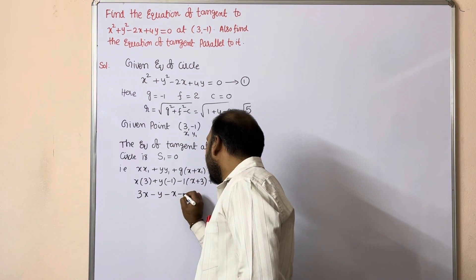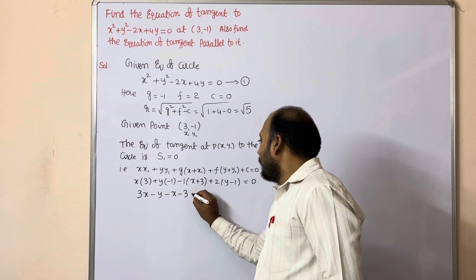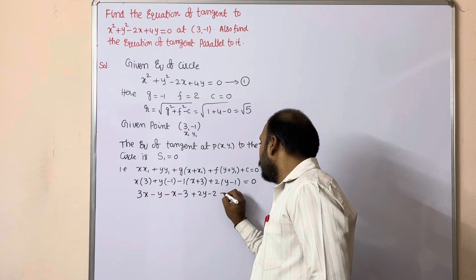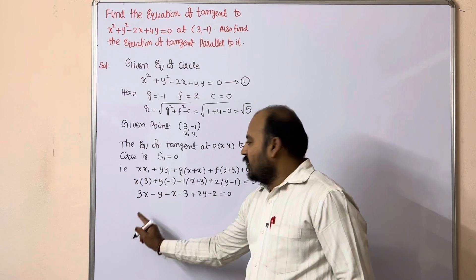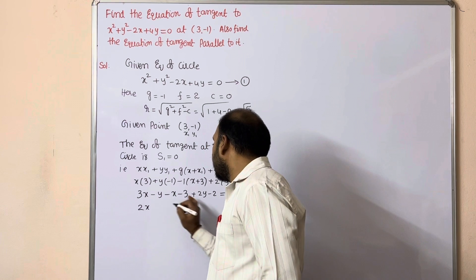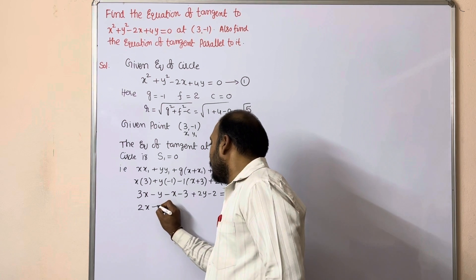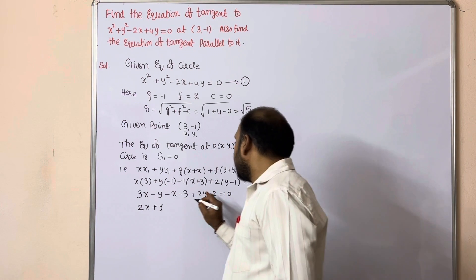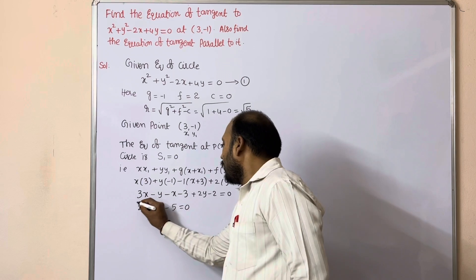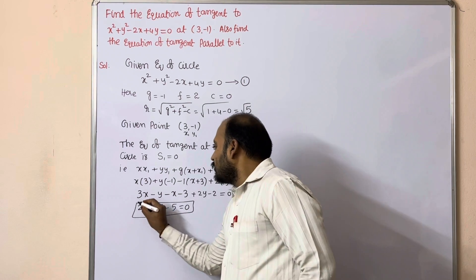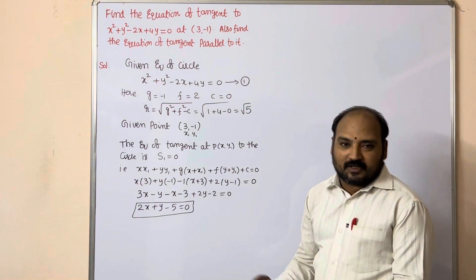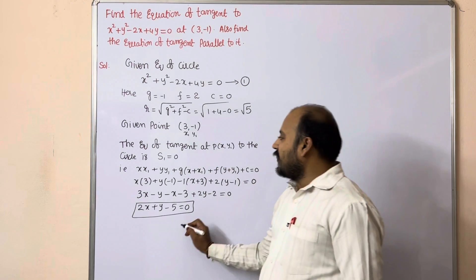Substituting the values, we get: x(3) + y(-1) + (-1)(x + 3) + 2(y - 1) + 0 = 0, which simplifies to 3x - x - y + 2y - 3 - 2 = 0, giving us 2x + y - 5 = 0. So this is equation 2, the tangent at point (3, -1).